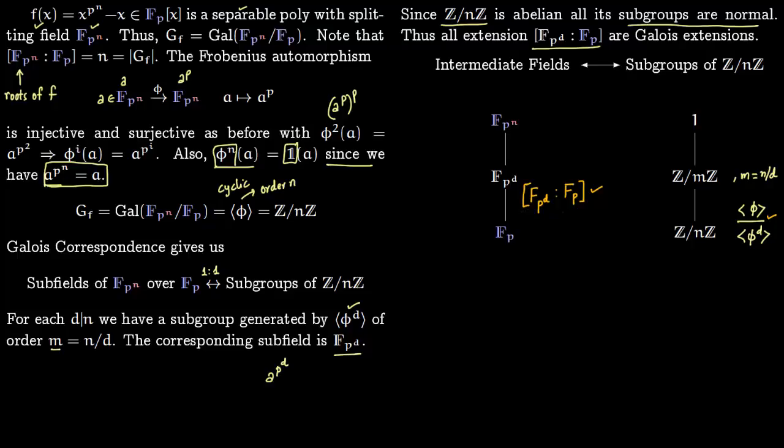An important remark for algebraic closures: we have seen if d divides n, then F_(p^d) is contained within F_(p^n) and there's some ordering. Therefore we have some partial order.